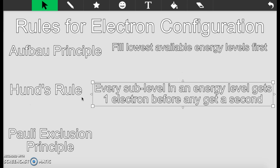Hund's Rule, our second rule: every sublevel in an energy level gets one electron before any sublevel gets a second electron. This one's a little easier to understand with a picture, which we'll add in a second.